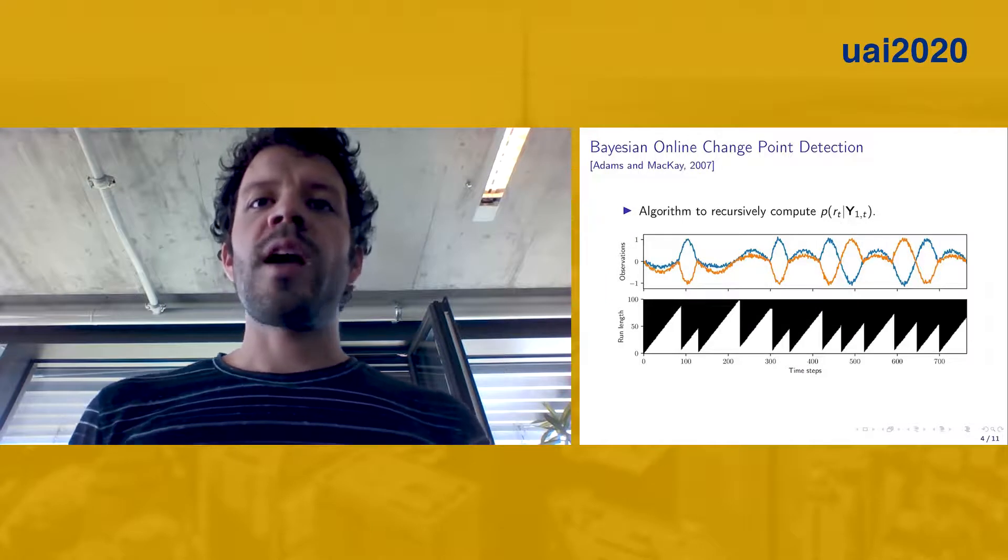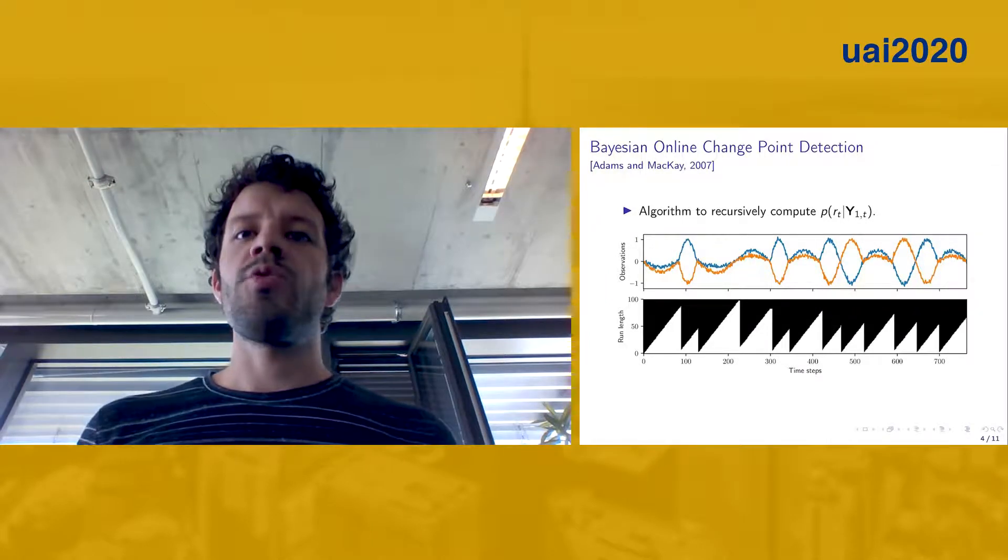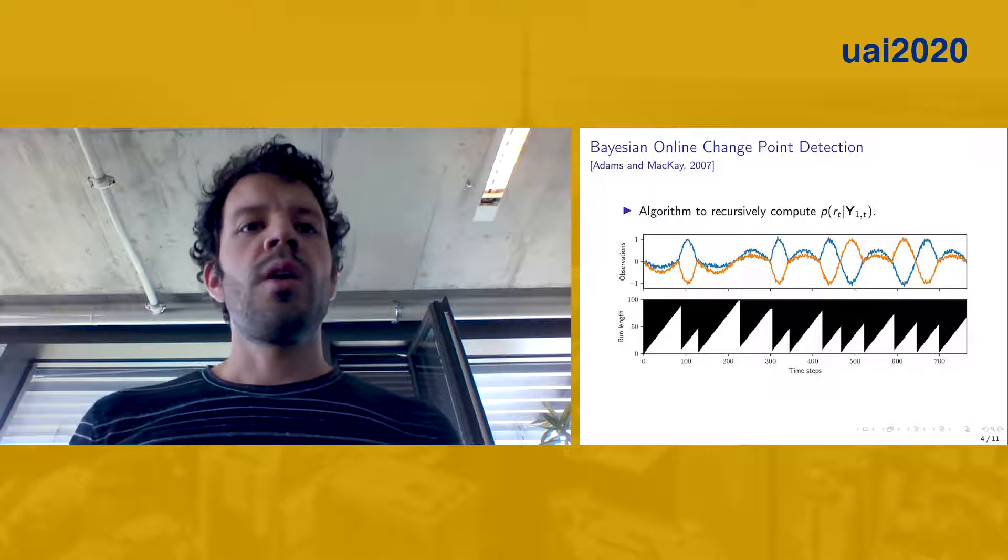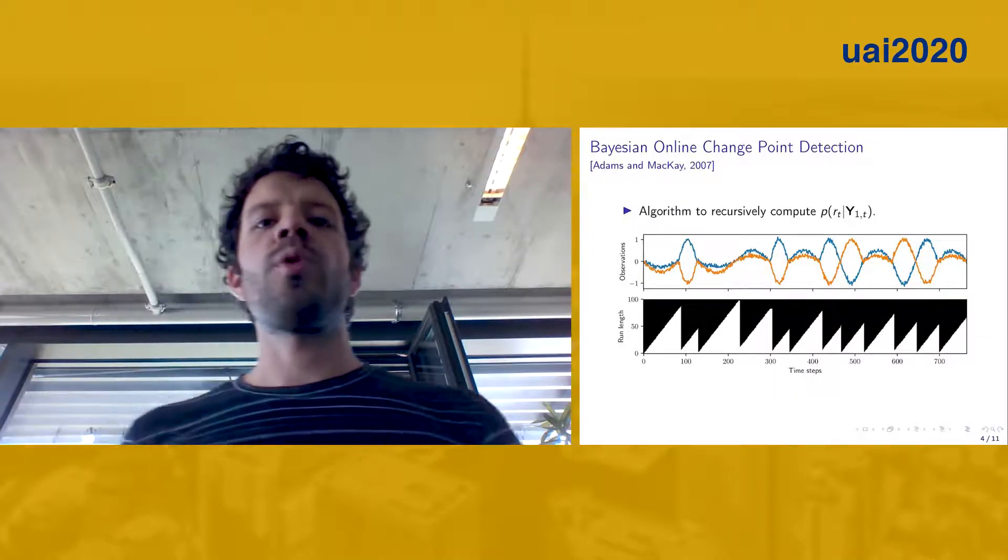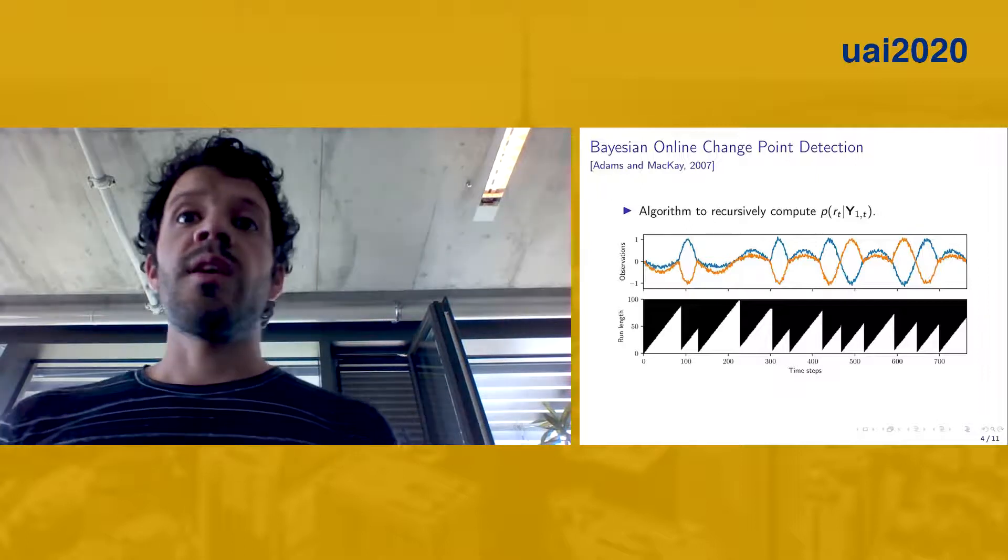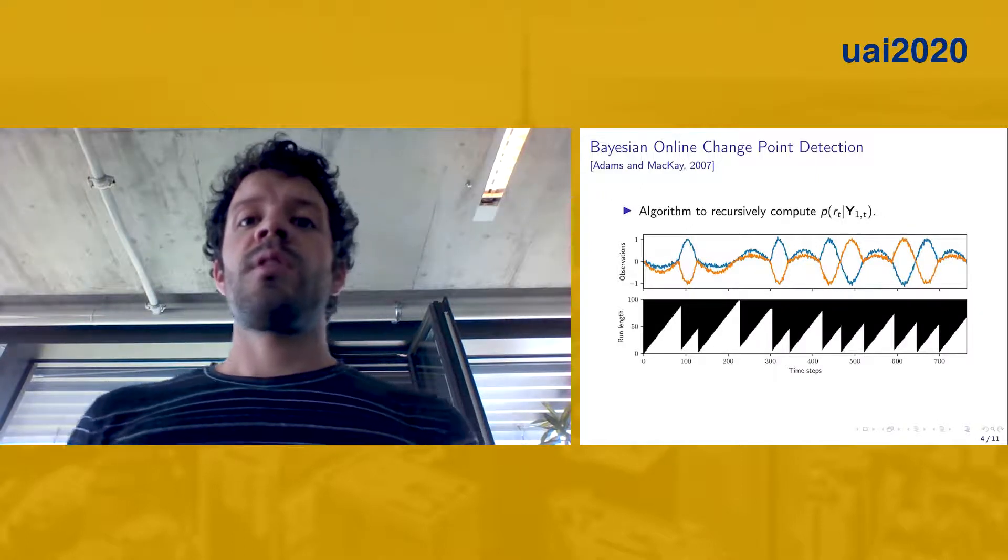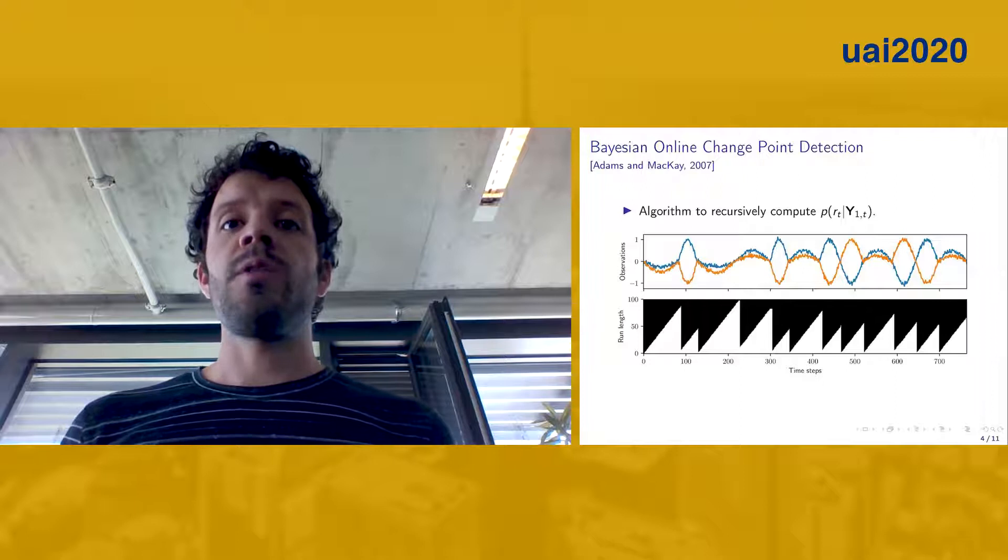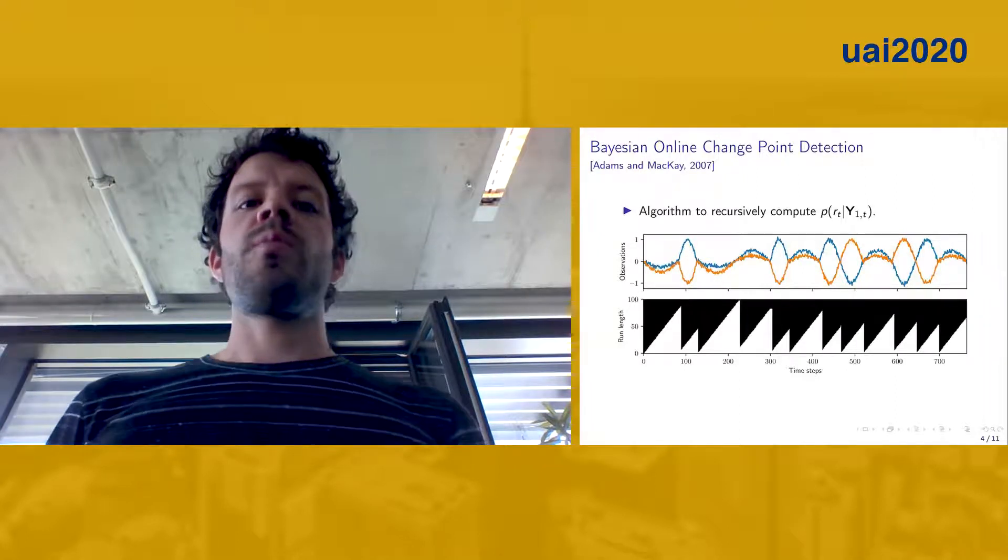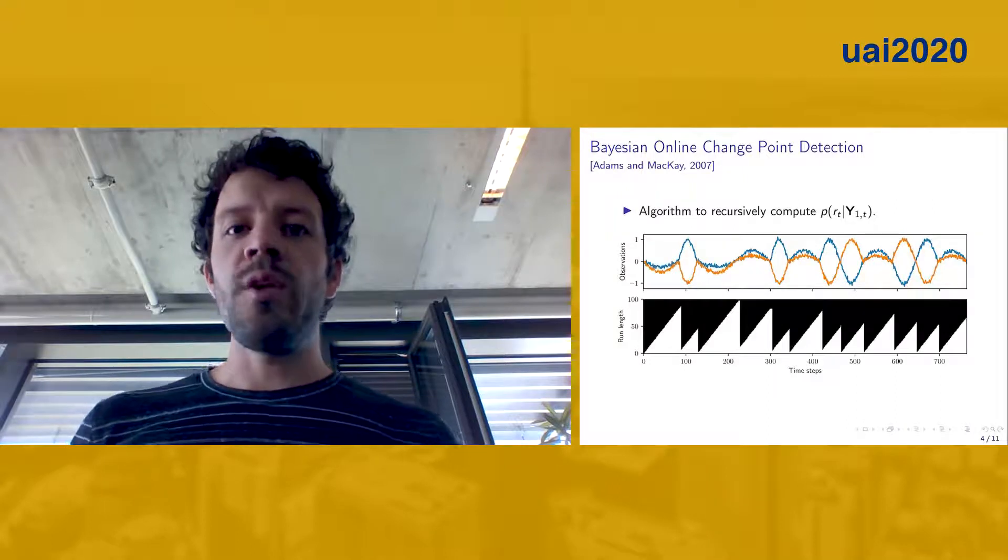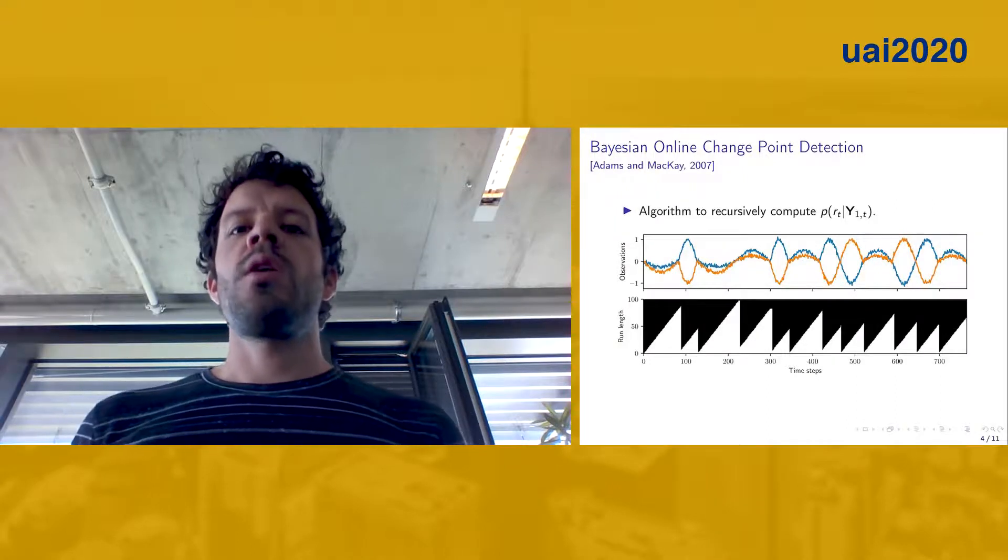With this figure we want to showcase the kind of inference that can be drawn from such posterior. In the top row you see a 2D observation sequence, and on the bottom row you see the resulting posterior inferences coming from the run-length posterior. Each column is a cumulative mass function where white denotes zero mass and black denotes one.